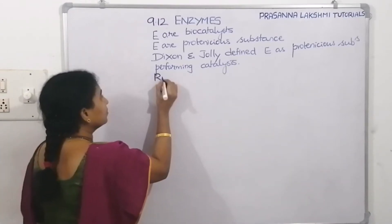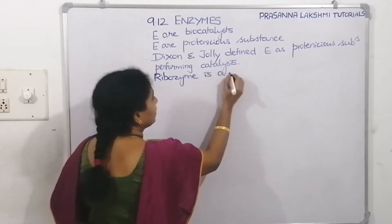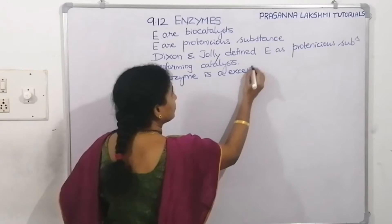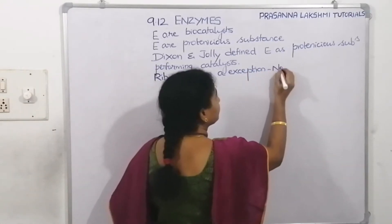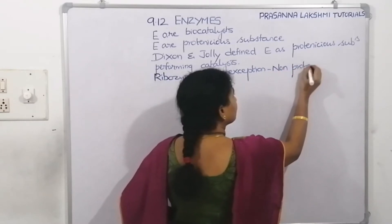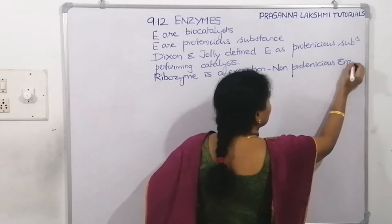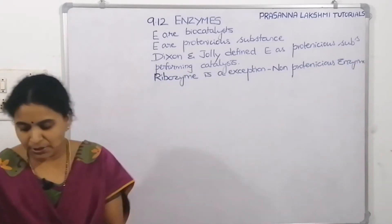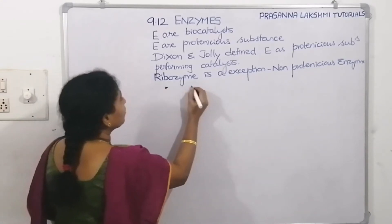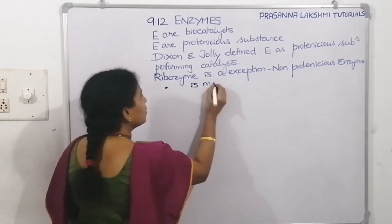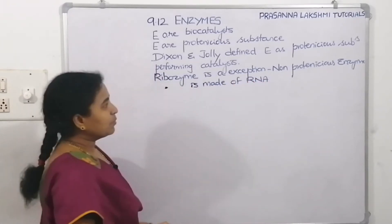That exception is ribozyme. Ribozyme is a non-proteinaceous enzyme. If it is not made up of protein, then what is it made of? Ribozyme is made up of RNA, not protein.